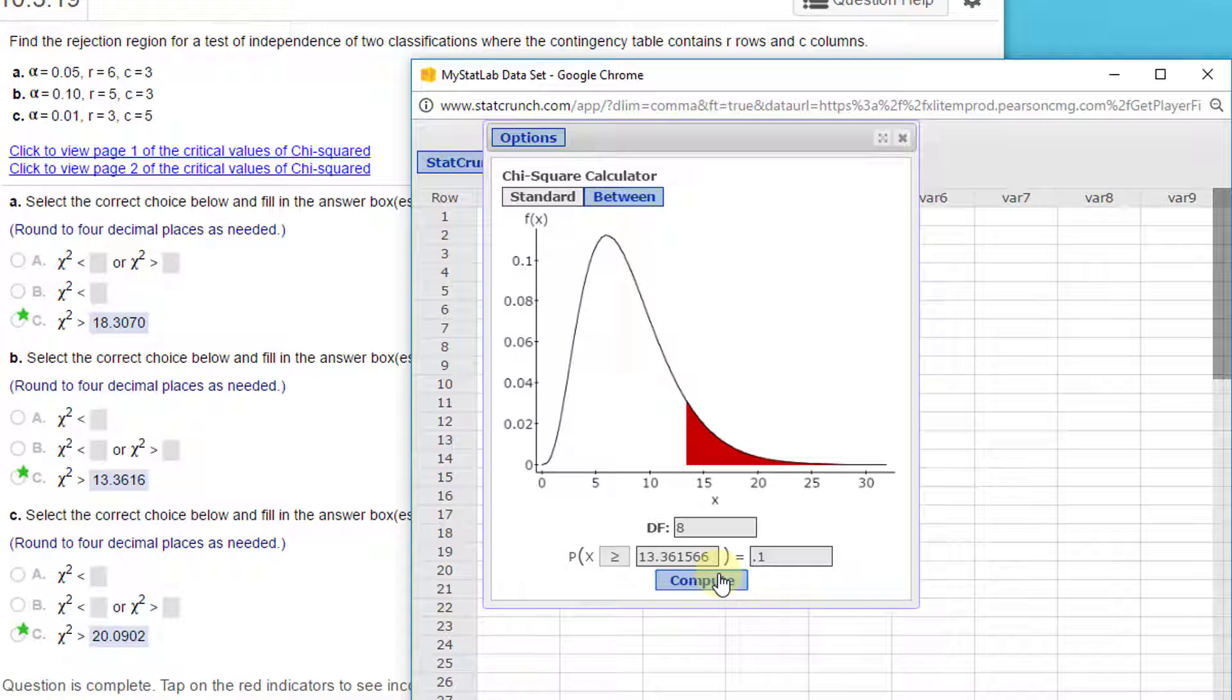The last problem is rows equal 3, columns equal 5. So 3 minus 1 is 2, 5 minus 1 is 4, 2 times 4 is 8, and alpha is 0.1. Click on Compute, and that gives me a critical value of Chi-Square of 20.090. So I hope this helps.